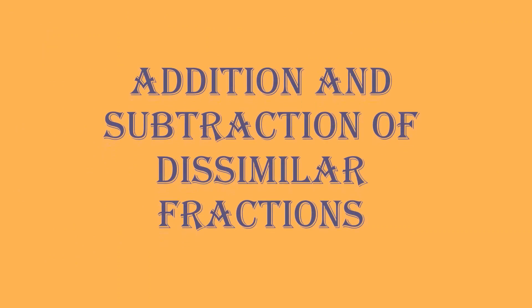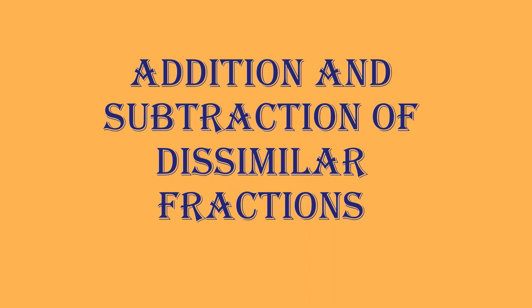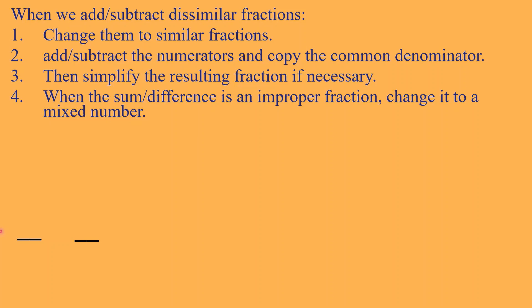Now, let us proceed to addition and subtraction of dissimilar fractions. When we add or subtract dissimilar fractions, meron lang tayong isang step na idadagdag sa unahan. And that is to change them to similar fractions. Kapag similar na siya, uulitin na lang natin yung ginawa natin kanina. Example, 2 thirds plus 1 fourth. Magkaiba ng denominator, dissimilar fractions. Anong kailangan natin? Kailangan natin si LCD. So, paano natin mahanap si LCD? Ililista natin yung multiples ng denominators.